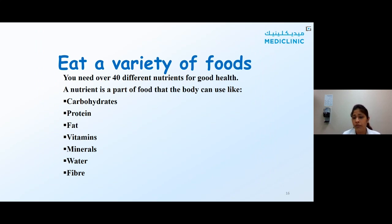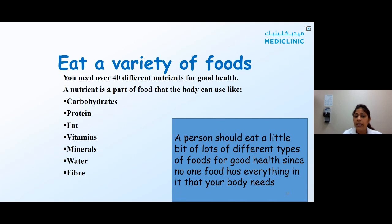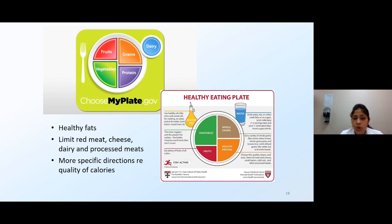Coming back to food — you have different food groups: carbohydrates including grains, proteins, fats, vitamins, minerals, fiber, and water. Every component is important. It's not that carbohydrates lead to weight gain and you simply remove them. You need a smart combination of these nutrients to ensure your body stays healthy without affecting your weight. Your healthy plate should have around 20–25% whole grains, with the rest divided among proteins, vegetables, fruits for fiber and vitamins, and healthy oils.